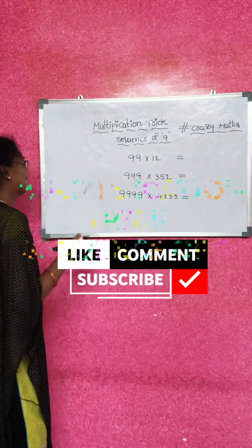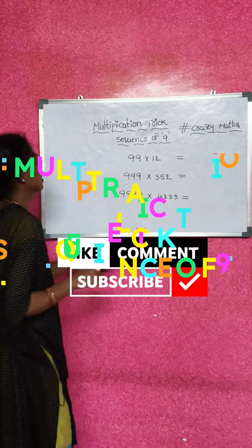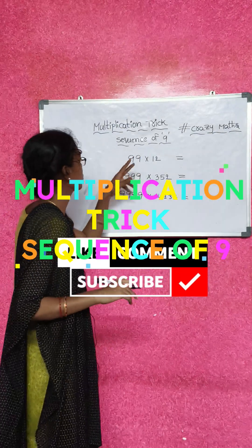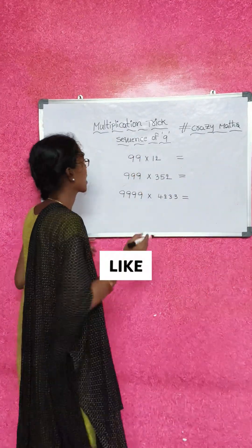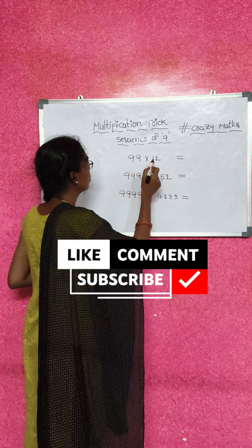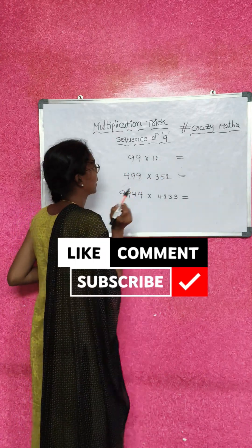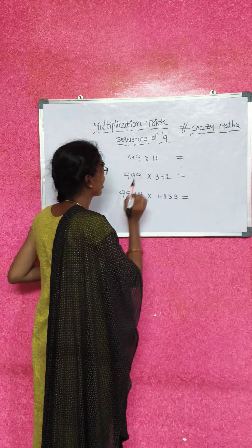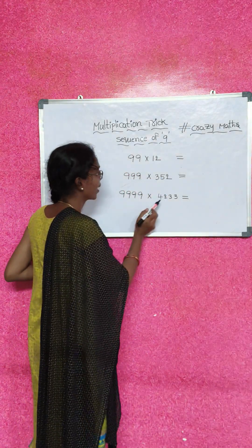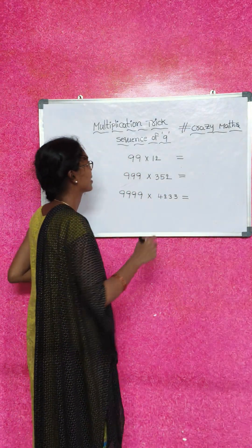Today I am going to talk about multiplication. A sequence of 9s is any number in multiplication. 99 is a 2-digit number, 999 is a 3-digit number, and a 4-digit sequence of 9s is a 4-digit number.